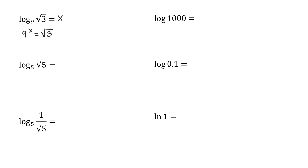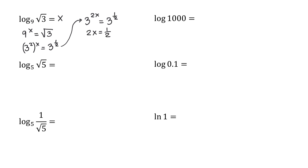Notice that on the left side, we can write 9 as 3 squared all to the x power. On the right side, we can write square root of 3 as 3 to 1 half. Then, on the left side, 2 times x is 2x. We will have 3 to the 2x equals 3 to 1 half. Because the bases are the same, we will make the exponents equal and write that 2x equals 1 half. Then, if we divide both sides by 2, we will get that x equals 1 over 4. So, log base 9 of square root of 3 equals 1 over 4.